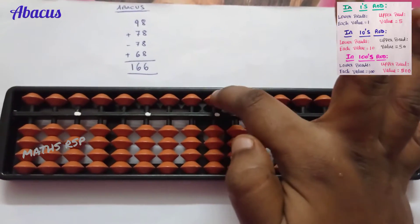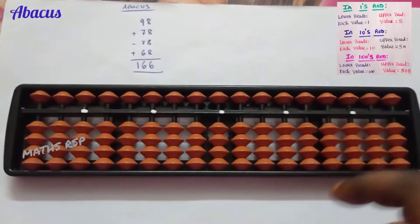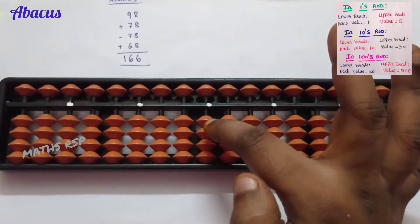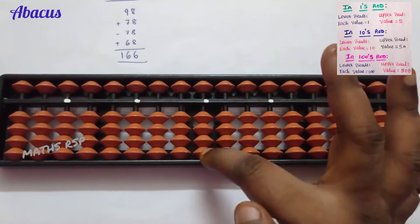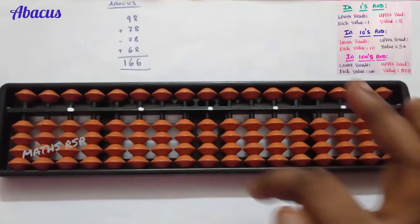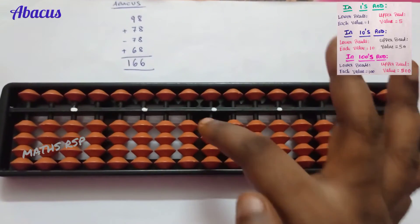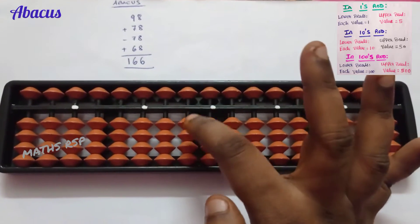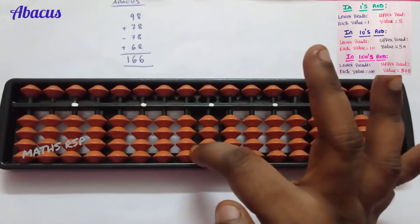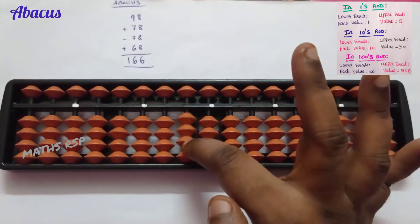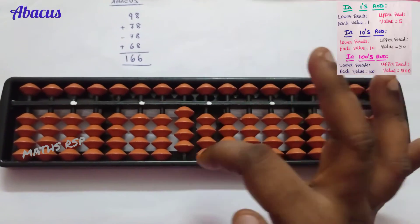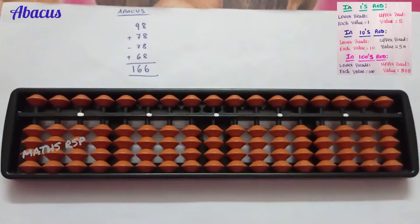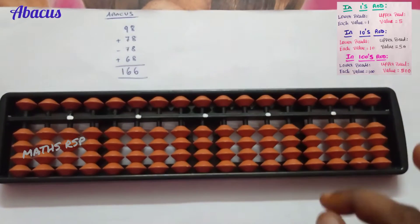Below this horizontal line are lower beads, and above this horizontal line are upper beads. In lower beads, each value is one — one, two, three, four. Upper bead value is five. In the ten's strot, each lower bead value is ten and the upper bead value is fifty.